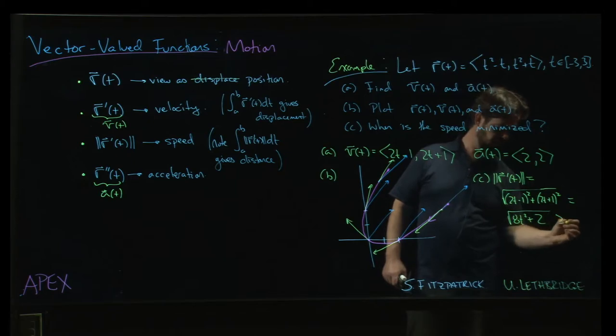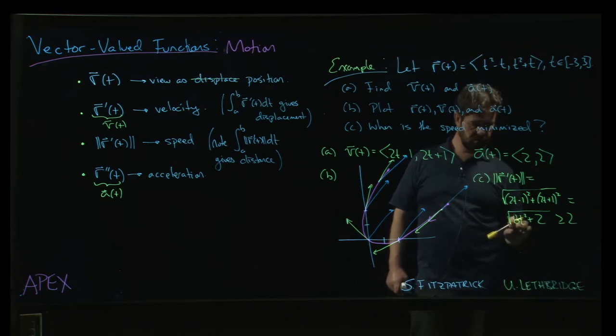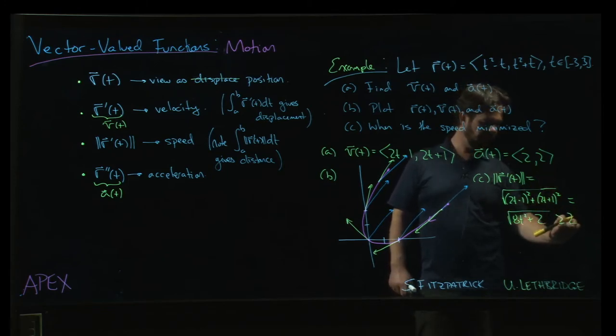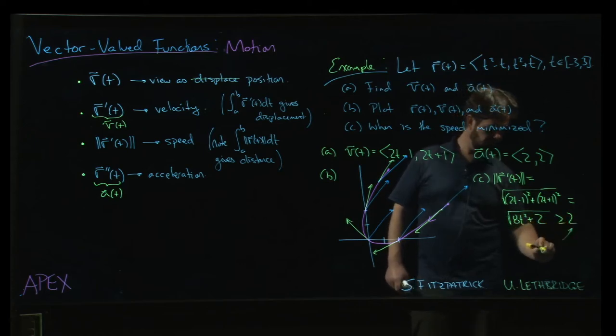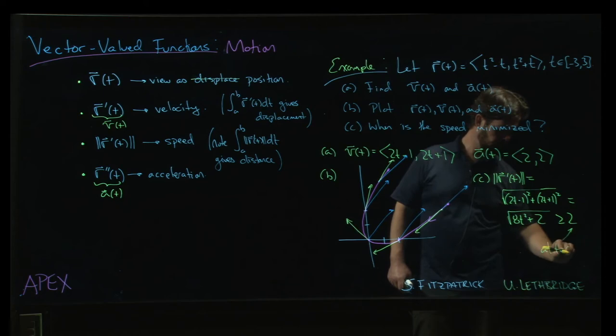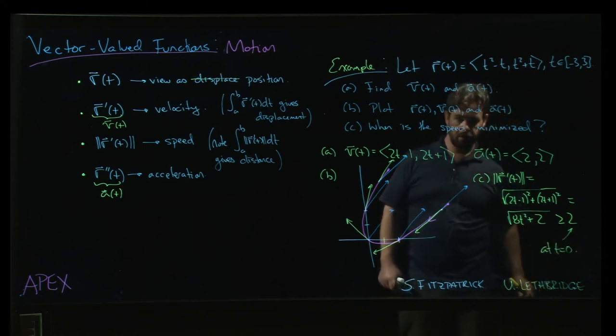And notice that this is always bigger than or equal to 2, right, because that's a square. It's a positive coefficient in front of a square. So this can never be negative. So the whole thing can never be less than 2. Where do we get that minimum value of 2 for the speed? Well, that's going to happen at time t equals 0.